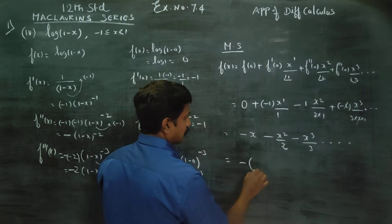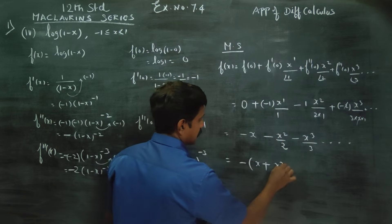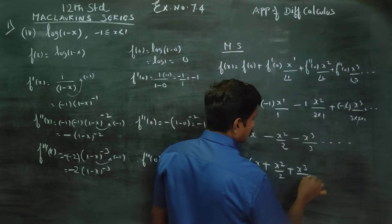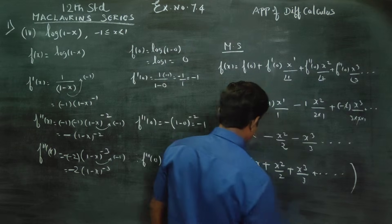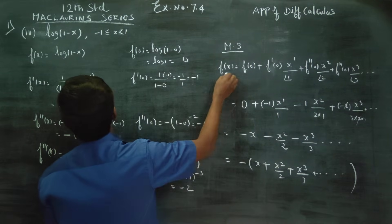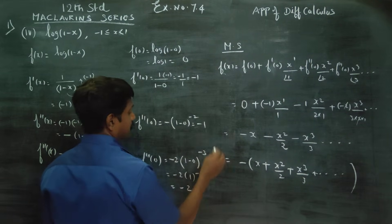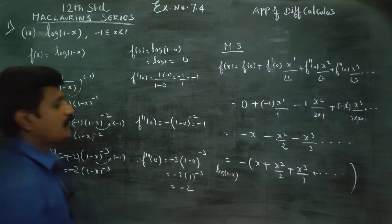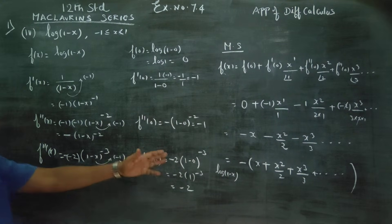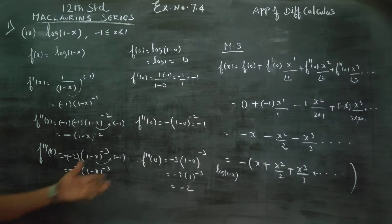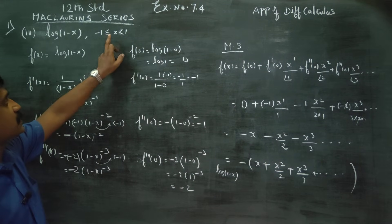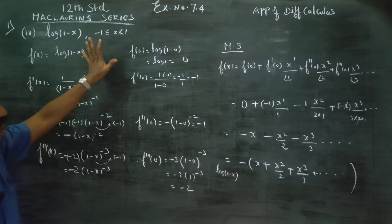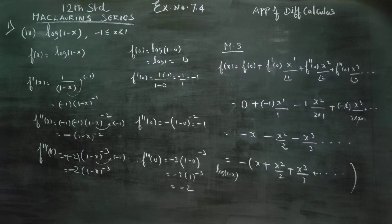Taking out minus 1, the expansion becomes log(1 minus x) equals minus times (x plus x squared by 2 plus x cubed by 3 plus dot dot dot). This is the expansion for log(1 minus x), with the condition that x is between minus 1 up to 1. This fulfills the Maclaurin series requirement.